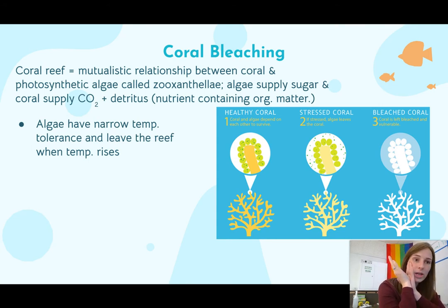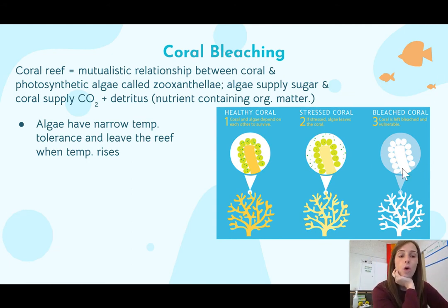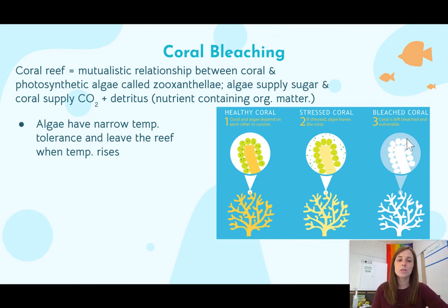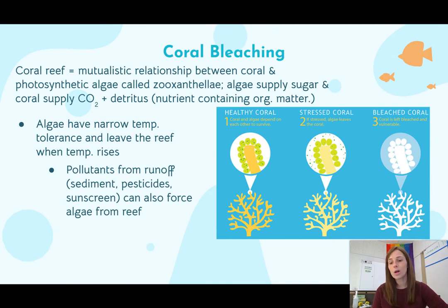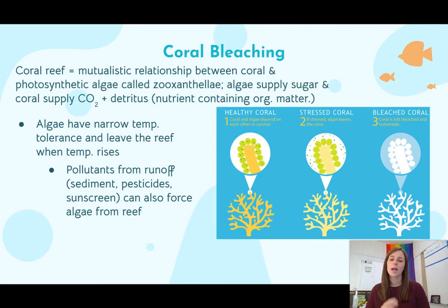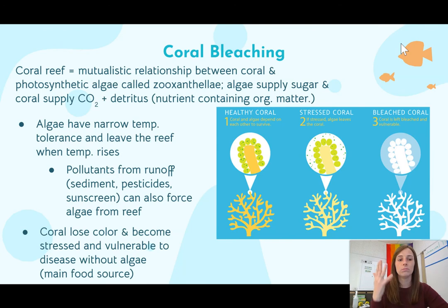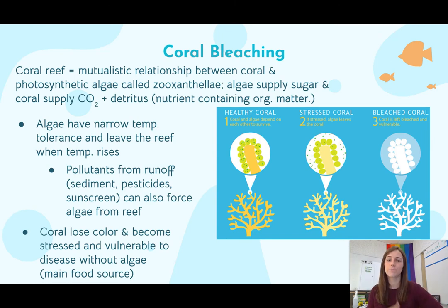When temperatures rise, the algae becomes stressed — no longer in its ideal temperature range — and it will leave the reef. The coral then becomes bleached; that white color just means the algae is gone. The problem is the coral just lost its food source, so the whole thing is going to die. When you see coral bleaching, it means it is dying or already dead. It's not just ocean warming: pollutants from runoff like sediment, pesticides, and sunscreen can also force algae from the reef. Without this food source, coral loses its color, becomes vulnerable to disease, and eventually starves and dies.